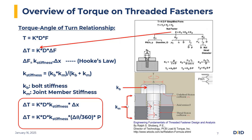This is the relationship between the torque and the angle of turn: T equals K times D times F. K is the nut factor, D is the nominal diameter, and F is basically the force achieved from Hooke's Law if you conceptualize the bolt and the member plates as an equivalent spring system. F equals stiffness times displacement, and the displacement can be expressed in terms of the angle of turn from the torque.